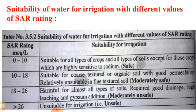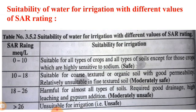The suitability of water for irrigation with different SAR values is shown in a chart. The formula for SAR is: SAR = Na⁺ divided by the square root of (Ca²⁺ + Mg²⁺) divided by 2. If SAR is 0 to 10 milliequivalents per litre, that water is suitable for all types of crops and soils, except for crops highly sensitive to sodium. This is considered a safe SAR ratio.